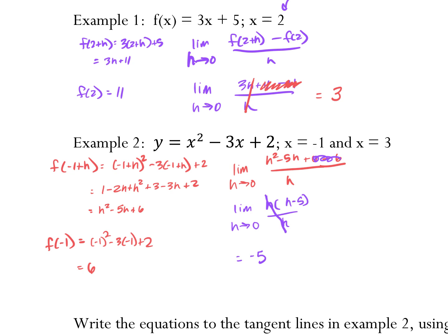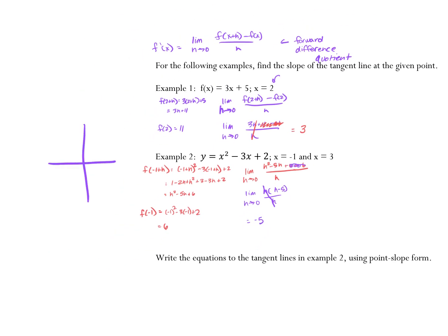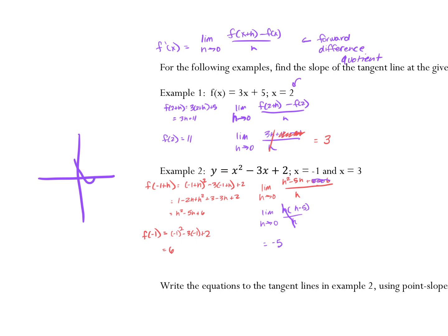The graph of x² minus 3x plus 2 looks kind of like this — it's a parabola. At x equals negative 1, we're talking about this point right here. Are we comfortable calling that slope negative 5? It's negative and relatively steep. At x equals 3, we're looking maybe right here, and we would expect it to be positive.